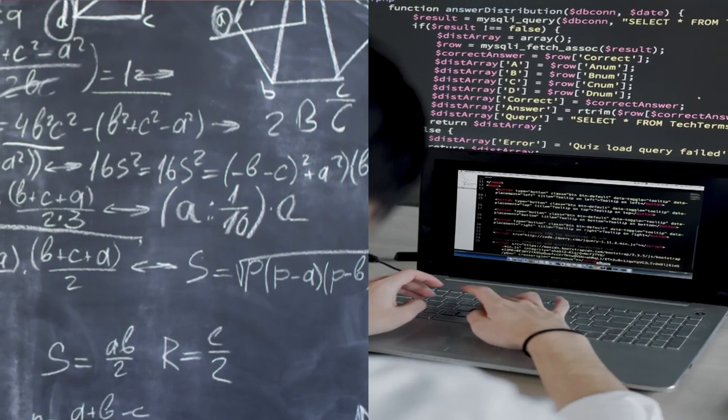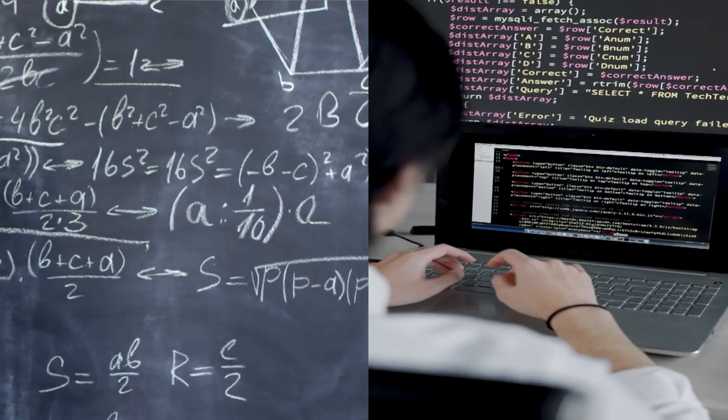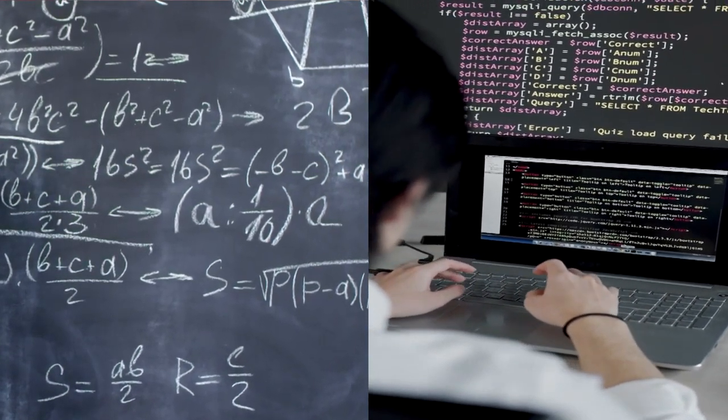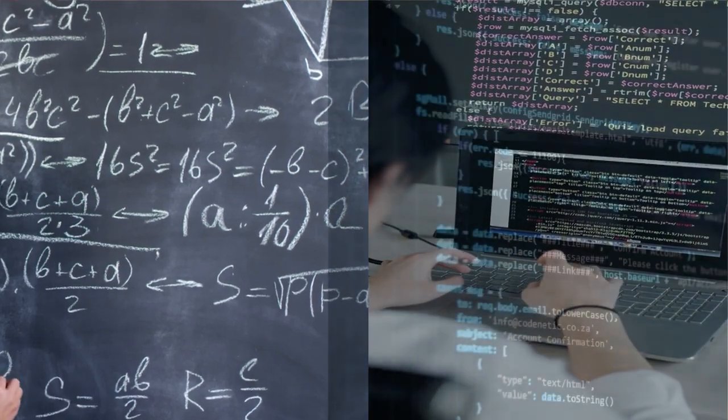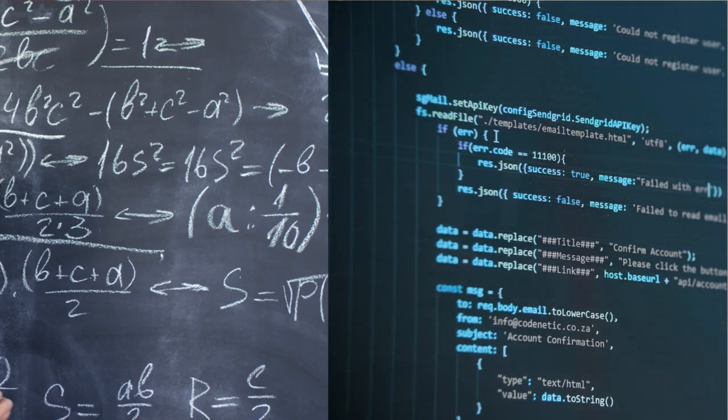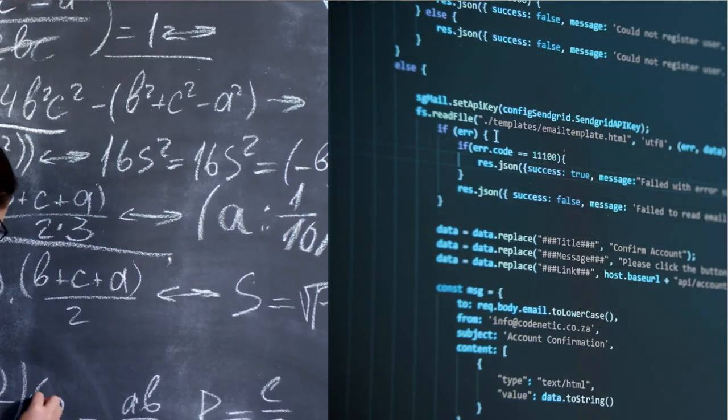Mathematics and computer science have always enjoyed a symbiotic relationship. Mathematics has helped in providing a solid theoretical basis for computer science, whereas computer science has enriched mathematics by posing interesting problems that can be solved using tools of mathematics.